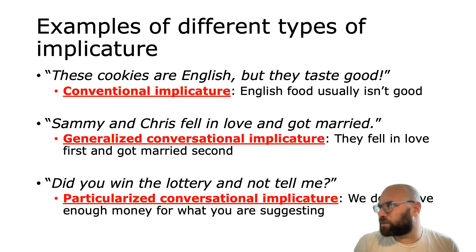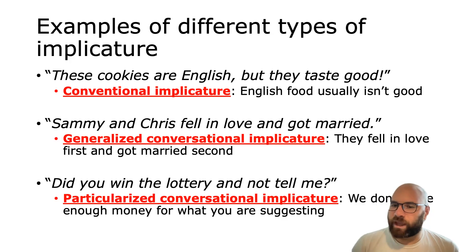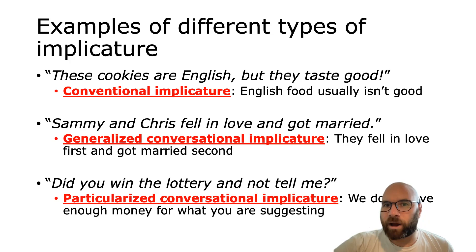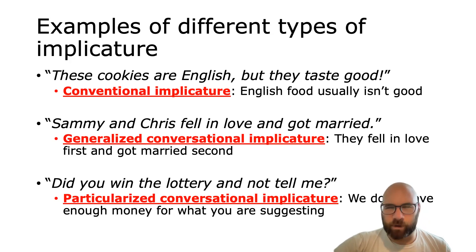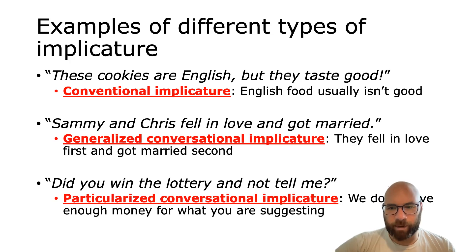A conventional implicature is an extra meaning that comes about because it is associated with certain words or certain sentence structures. In our example it's the word 'but' — whenever we use 'but,' we get this extra bit of meaning. Conversational implicatures come from the cooperative principle we discussed in previous modules. When we have a conversation, we assume people are cooperating and saying relevant things, and we reinterpret what they say based on that assumption and on what we know about what the person might mean. So implicatures based on the cooperative principle are conversational implicatures, separate from conventional implicatures.